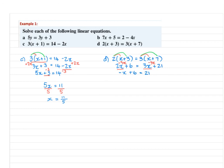Using the inverse operation of addition, we subtract 6 on both sides, which leaves minus x is equal to 21 minus 6, which is 15. The question asks us to solve for x, not minus x. Since minus x is really minus 1 times x, the inverse operation is division — divide both sides by minus 1. That leaves x is equal to minus 15.